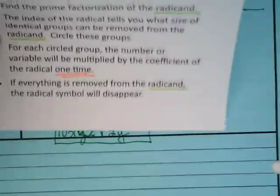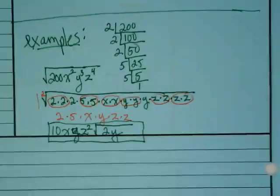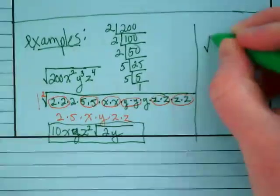Step four says if everything is removed from the radicand, the radical symbol will disappear. But we still have things inside, so it's still there. A simpler version of this that you guys already know. Let's go back to one of our examples from yesterday.